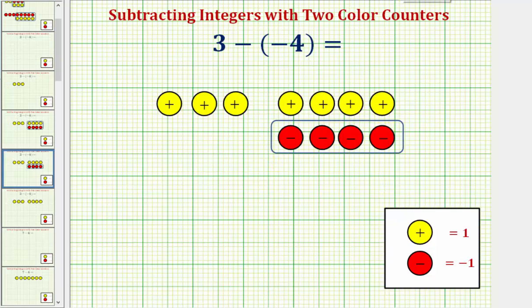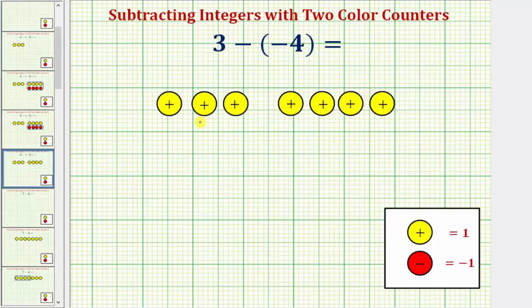And notice how once we do this, we're left with seven yellow counters, which equals positive seven. Which means three minus negative four equals positive seven.